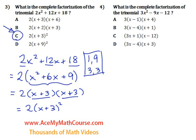Now let's do question 4. Similar question. We have 3x squared minus 9x minus 12. Now I can get started by factoring out a 3, because 3 is a factor of all these numbers.